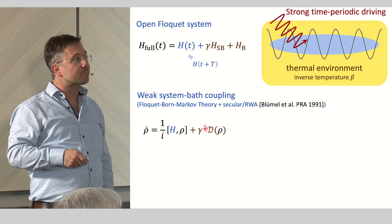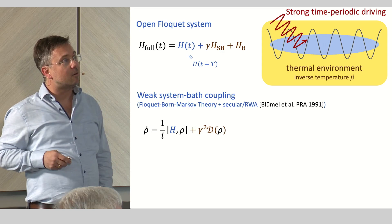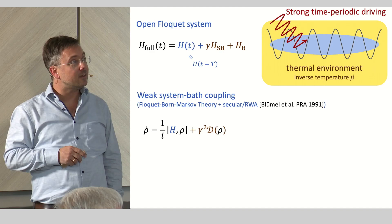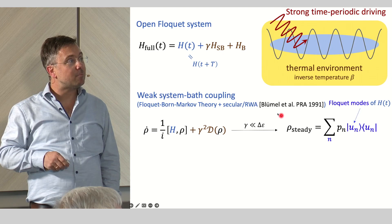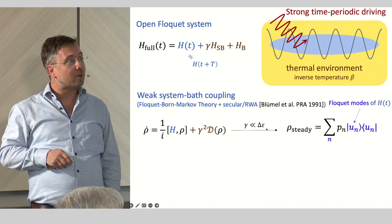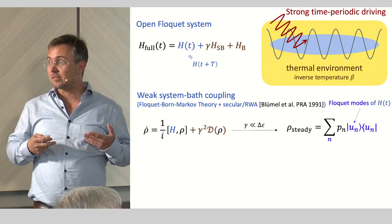Then you have a dissipator which describes processes which are not just given by unitary evolution of the state, but dissipative processes. Now let us focus for simplicity, both for us it's easier to calculate and also conceptually for you it's easier to present, to the limit of ultra-weak coupling. So that the coupling to the bath is the smallest energy scale, even smaller than the level splitting in the system. This might be a really strong assumption and it's not always given and you can also go beyond this, but let's assume it nevertheless.